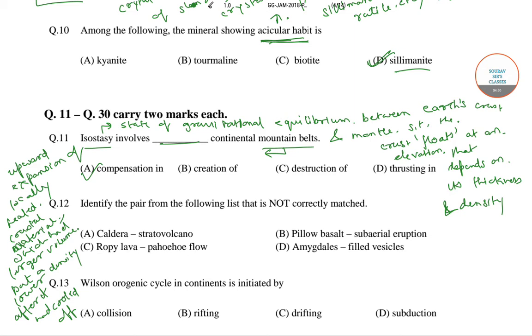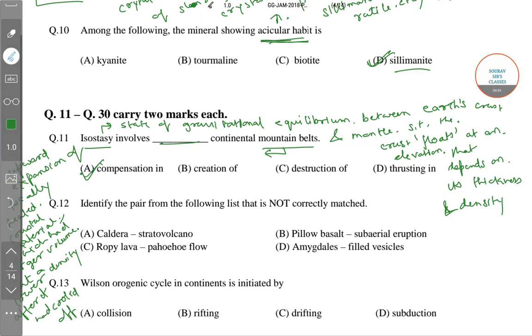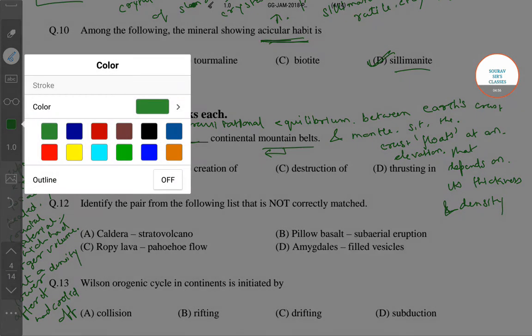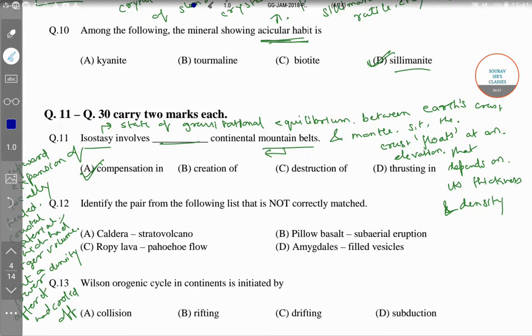So the fill in the blank will be filled by option number A — that is, isostasy involves compensation in continental mountain belts. The correct answer of this question is option number A.